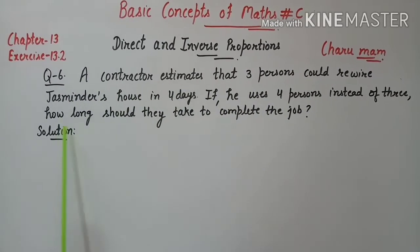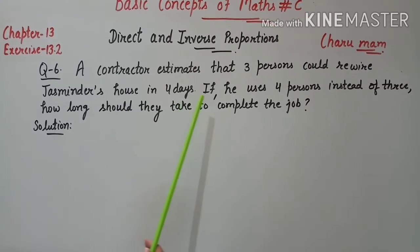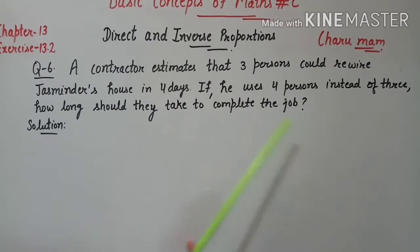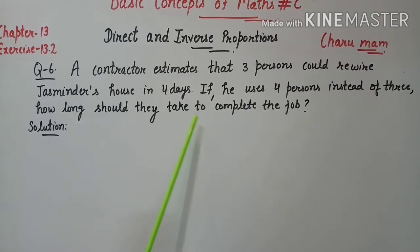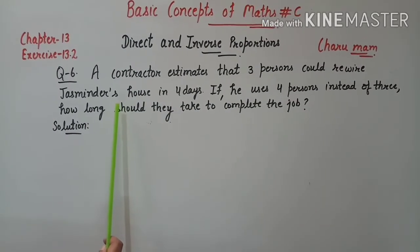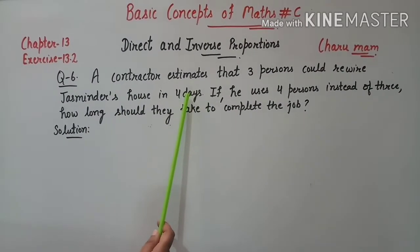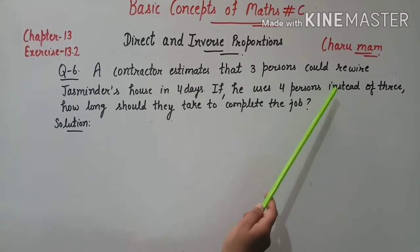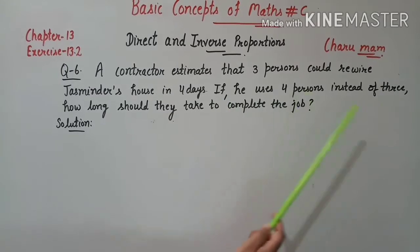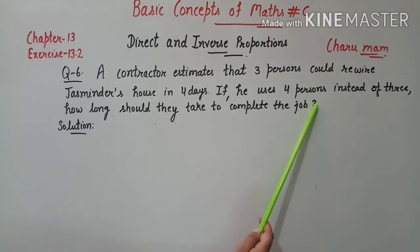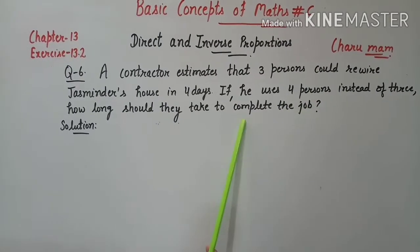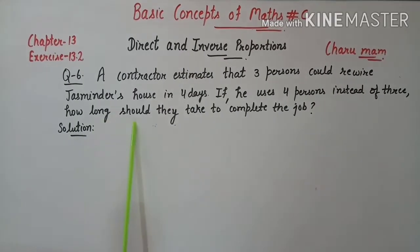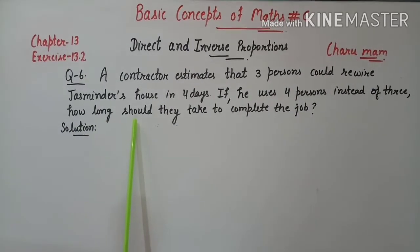Question 6 statement: A contractor estimates that 3 persons could rewire Jasminder's house in 4 days. If he uses 4 persons instead of 3, how long should they take to complete the job? यानि कि 3 persons की जगह 4 persons यूज़ की जाएं तो उसी job को complete करने में कितना time लगेगा — हमें number of days find करने हैं।